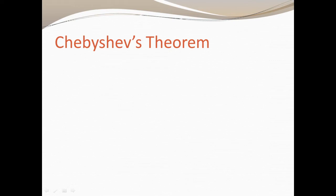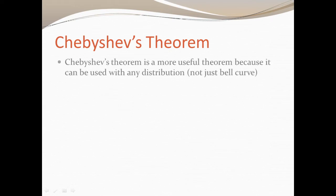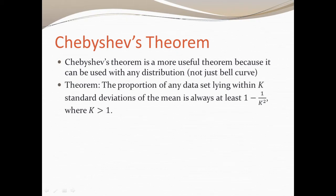Chebyshev's theorem is more appropriate when dealing with any distribution. It can be used with any type of distribution, not just the bell curve. Chebyshev's theorem states the proportion of any data lying within K standard deviations will always be at least 1 minus 1 over K squared, where K has to be greater than 1.